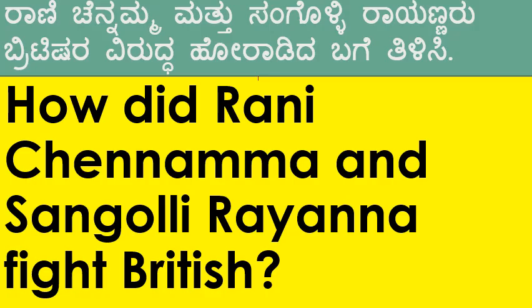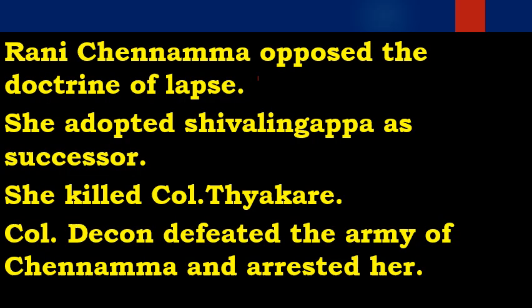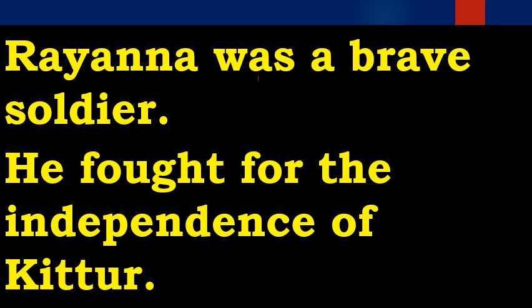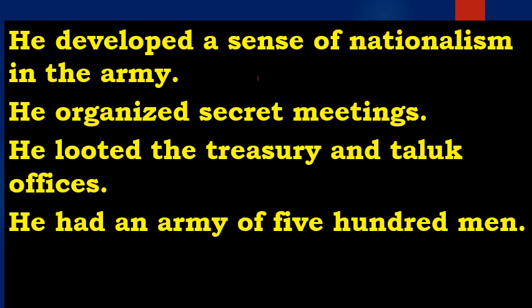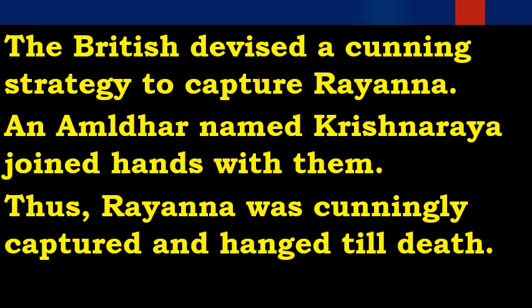How did Rani Channama and Sanguldi Rayana fight the British? Rani Channama opposed the doctrine of lapse. She adopted Shivalingappa on the throne as a successor. She killed Colonel Thackeray. Colonel Deacon defeated the army of Channama and arrested her. Rayana was a brave soldier who fought for the independence of Kitturu and developed a sense of nationalism. Finally, Rayana was cunningly captured and hanged till death.